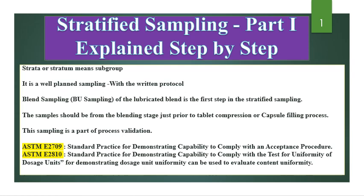Strata or stratum means a subgroup. In this sampling, subgroups are made. Strata are made for sampling, that's why it is called stratified sampling. Stratified sampling is a well-planned sampling with a correct and proper written protocol. Blend uniformity sampling — that is BU sampling of the lubricated blend — is the first step in stratified sampling. In tablet and capsule manufacturing, first the lubricated blend is prepared and then that lubricated blend is compressed into tablets or filled into capsules.